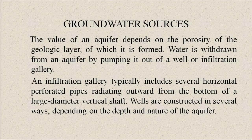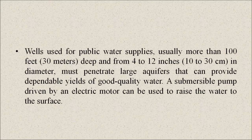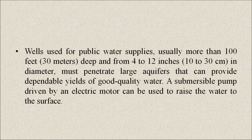Now let us come to global groundwater sources. The value of an aquifer depends on the porosity of the geologic layer of which it is formed. Water is withdrawn from an aquifer by pumping it out of a well or infiltration gallery. An infiltration gallery typically includes several horizontal perforated pipes radiating outward from the bottom of a large diameter vertical shaft. Wells are constructed in several ways depending on the depth and nature of the aquifer. Wells used for public water supply are usually more than 100 feet deep and from 4 to 12 inches in diameter, and must penetrate a large aquifer that can provide dependable yields of good quality water.